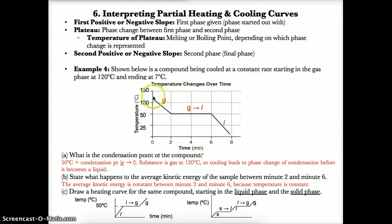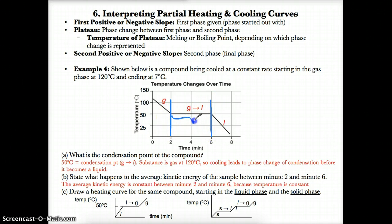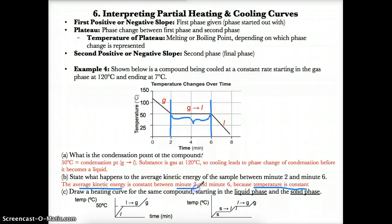Part B asks: what happens to the average kinetic energy between minute 2 and minute 6? During this time, the temperature is constant at 50 degrees Celsius, which is the condensation point. Since temperature is constant, and temperature relates to average kinetic energy, the average kinetic energy is constant between minute 2 and minute 6.